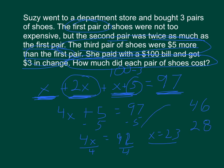So the three answers for the price of the three pairs of shoes are $23, $46, and $28. I know that is a lot. The more you practice these, the better you will get at it. Thank you for watching.